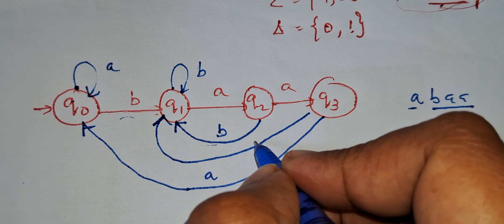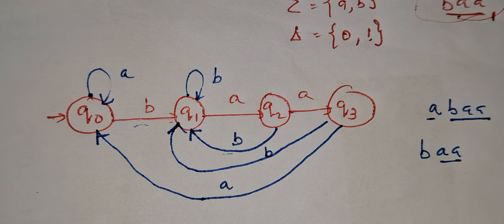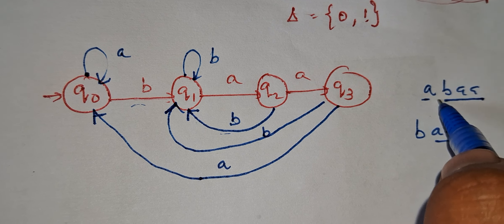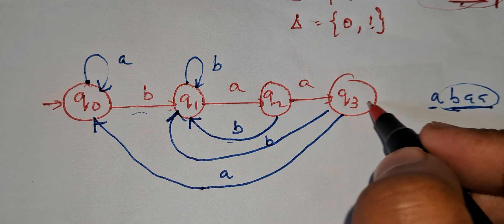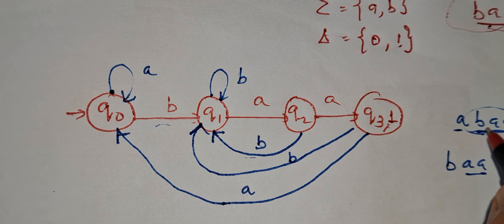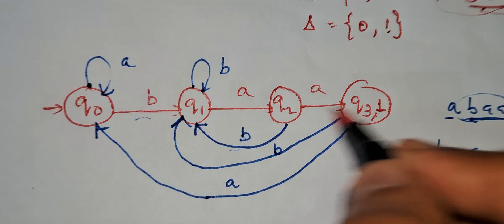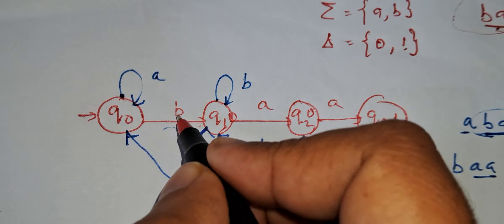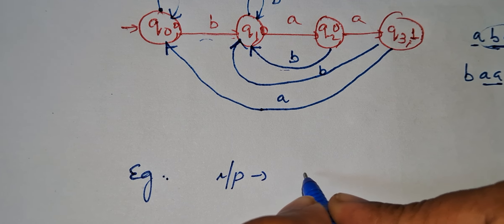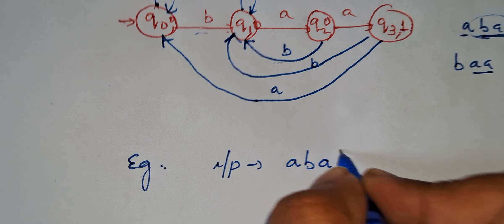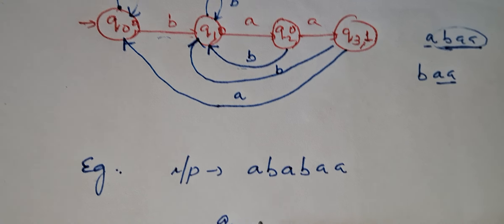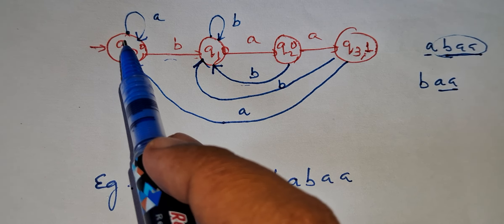This is our automata. Whenever we are seeing the substring 'baa' it will output 1. As I told you, whenever we are reaching q3 we are seeing the substring 'baa', so we put output 1 at q3. The remaining states output 0. For example, suppose our input is 'ababaa'.